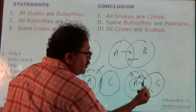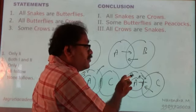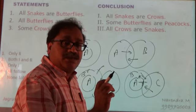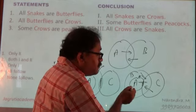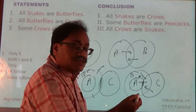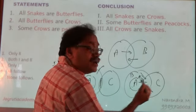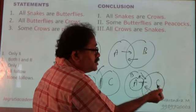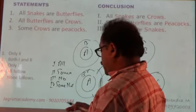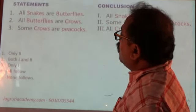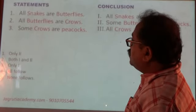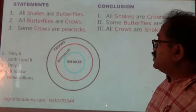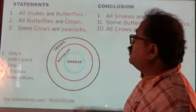But coming to this part: when it is said some A's are C's, I can definitely say some B's are C's and some C's are B's. Although there is no direct statement between B and C, it said all A's are B's and some A's are C's. So in order to make some A's are C's, it is possible only when C enters inside B and comes up to A. Therefore some B's are C's, some C's are B's. With this background, let's take the answer: all snakes are butterflies, all butterflies are crows, so this is the diagram. Third, some crows are peacocks.